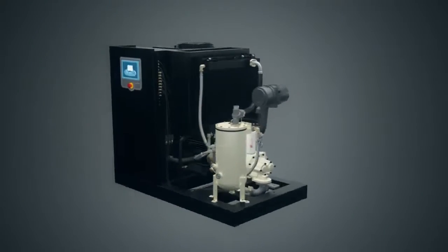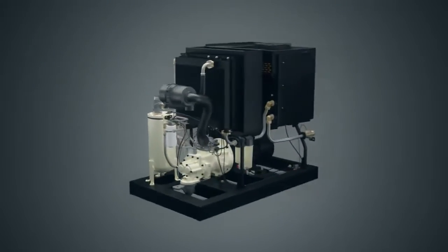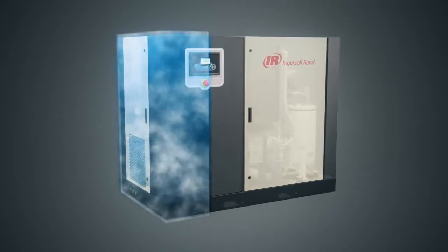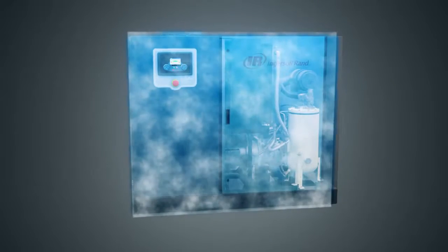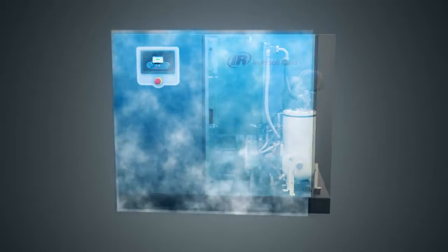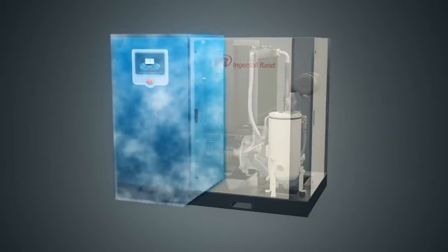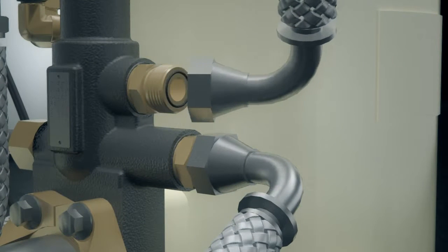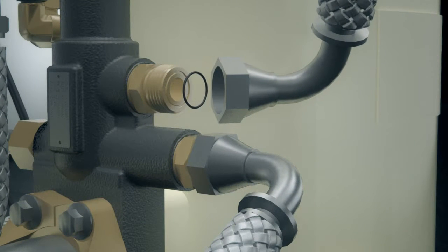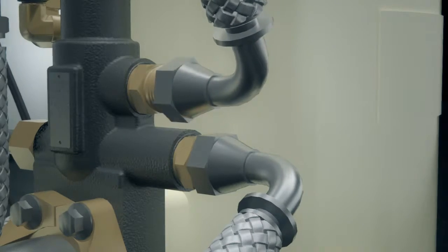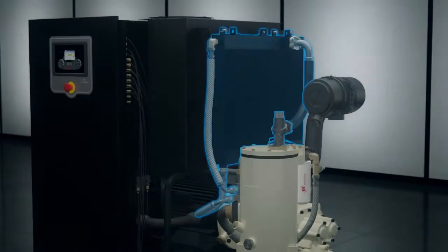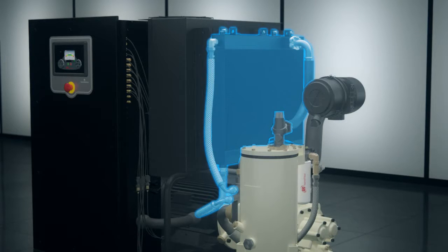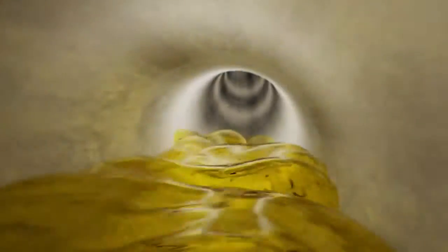Not only are the next generation R-series compressors Ingersoll Rand's most energy efficient and intelligent compressors, they're also the most reliable, with features like progressive adaptive control that continuously monitors key operating parameters and adapts to prevent unexpected downtime, V-Shield technology which includes robust piping, maintenance-free hoses and extensive use of elastomeric seals for repeatable leak-free connections, and the free-floating cooling system which is easy to access and extends service life by reducing thermal stress.